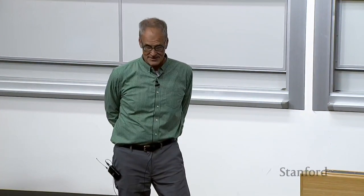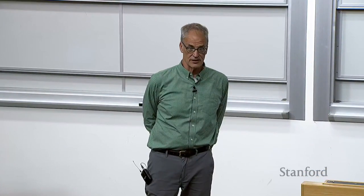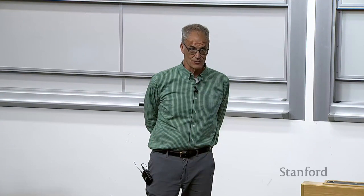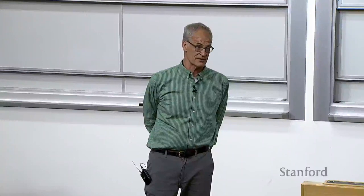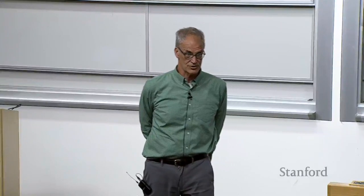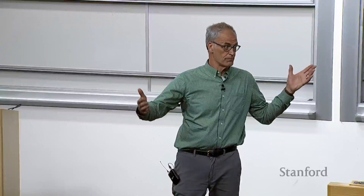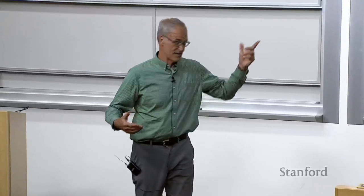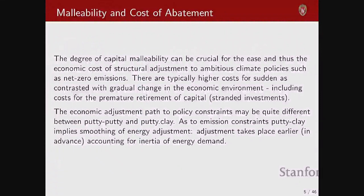The degree of capital mobility is crucial to the ease and structural adjustment required for ambitious policies. If we think about net zero or other aggressive short-run policies, this effect really matters. Premature retirement of capital is often cited as the main cost of an overly aggressive climate policy — like 'we're going to have to walk away from all this capital.' In 2006, China installed the equivalent of one quarter of the entire U.S. generating fleet in a single year. The question is: how rapidly does the quasi-rent on that capital fall to zero?